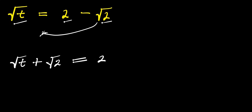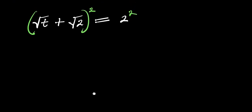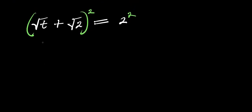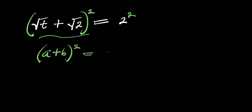The next step will be to take the squares of both parts of this equation — I'll raise both sides to the power of 2. I can expand the left side using the identity: a plus b raised to the power of 2 equals a squared plus 2ab plus b squared.